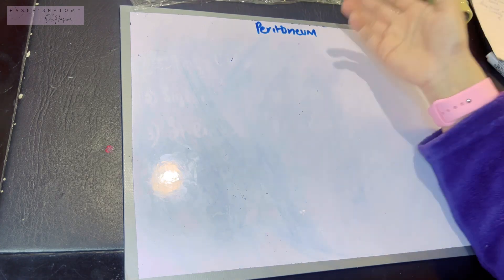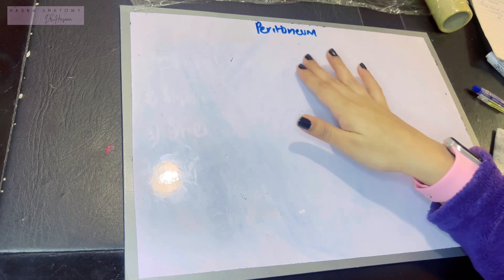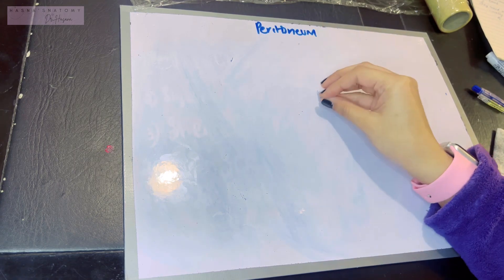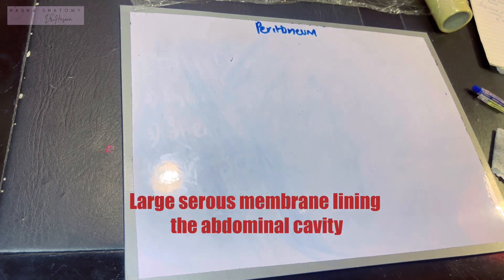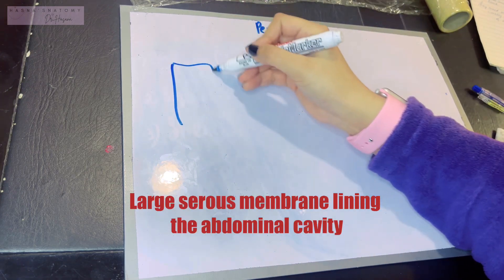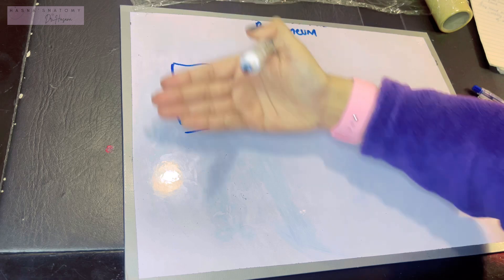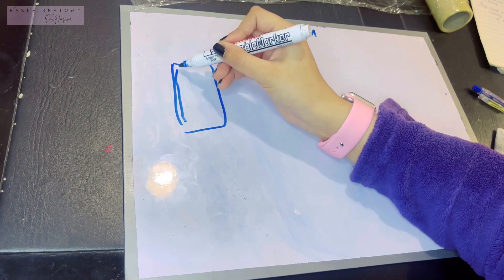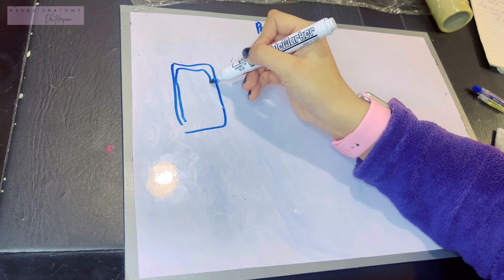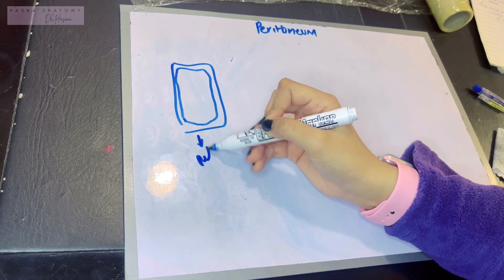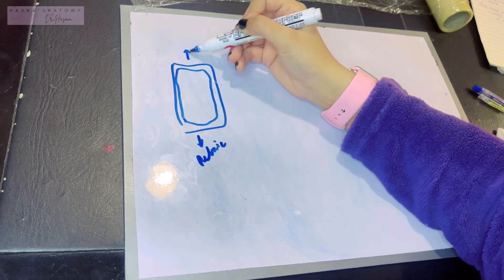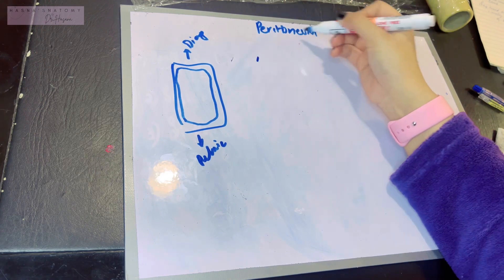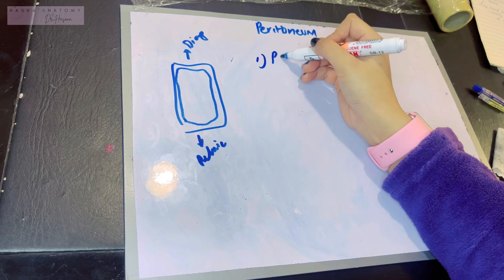What is the peritoneum? By definition, it is a large serous membrane lining your abdominal cavity. If this is your entire abdominal cavity — suppose I'm cutting your abdomen and taking a sagittal section, seeing your abdomen from side view — the peritoneum will be lining this entire cavity. Below is the pelvic cavity, whereas above is the under surface of the diaphragm.